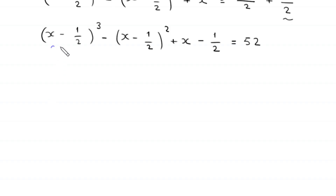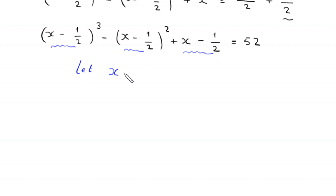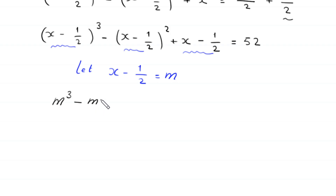Now, we notice that the expression (x minus 1/2) appears in three places. So we let x minus 1/2 equal m. Then the equation becomes m cubed minus m squared plus m is equal to 52.